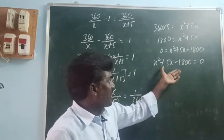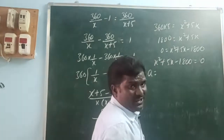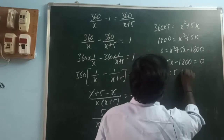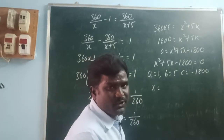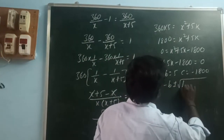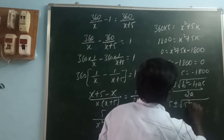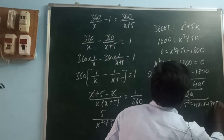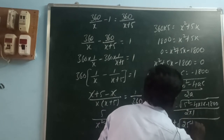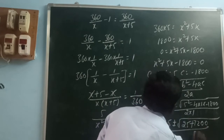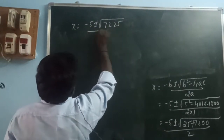We can find the x value using the quadratic formula. Comparing with the general form ax² + bx + c = 0: a = 1, b = 5, c = −1800. The quadratic formula is x = (−b ± √(b² − 4ac)) / 2a. That gives x = (−5 ± √(25 − 4×1×(−1800))) / 2 = (−5 ± √(25 + 7200)) / 2 = (−5 ± √7225) / 2.